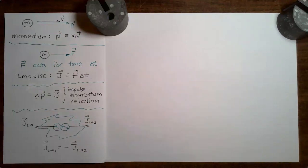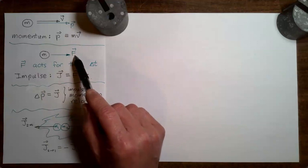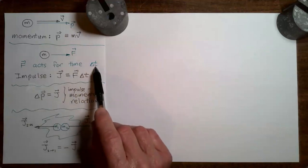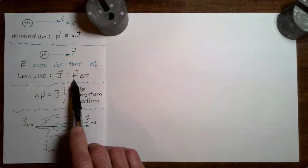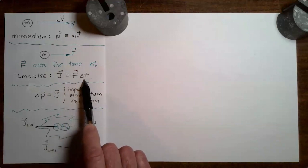At this point in the module, I have introduced you to two main ideas. The first of these is the idea of impulse. If a force acts on a mass for a time delta t, we say that the force delivers an impulse to the mass. That impulse is equal to the force that acted multiplied by the time interval for which the force was acting.